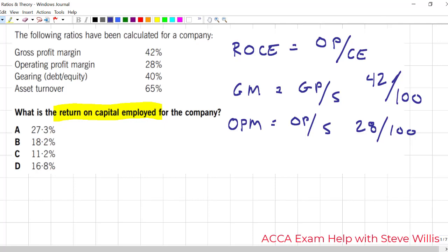We have some gearing, I don't need that for now. We also know the asset turnover, and that is equal to sales over capital employed. That is equal to 65 over 100.